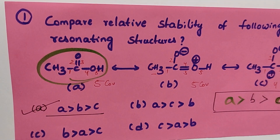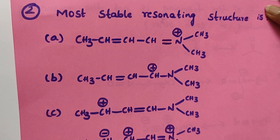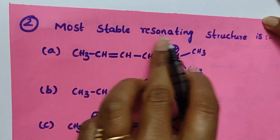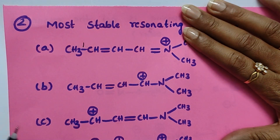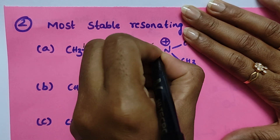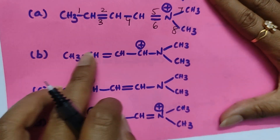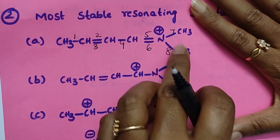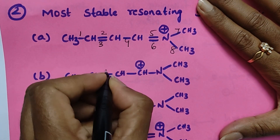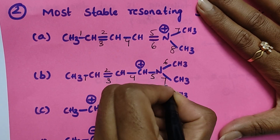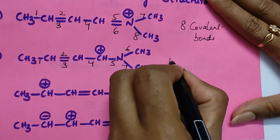Question number two: find the most stable resonating structure. It looks difficult but see how easily you can solve it. I'm not counting CH3 bonds because that unit is the same in all structures — it saves time. Counting the remaining bonds: one, two, three, four, five, six, seven, eight — that's eight covalent bonds here. Next structure: seven covalent bonds.